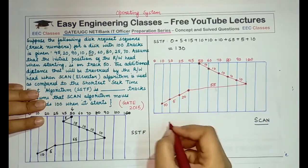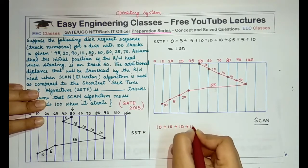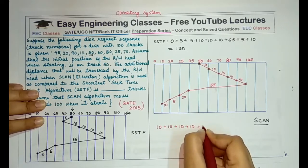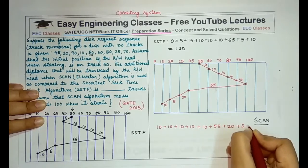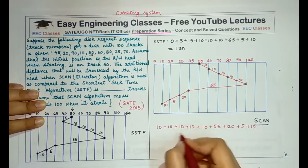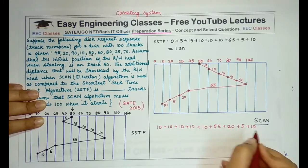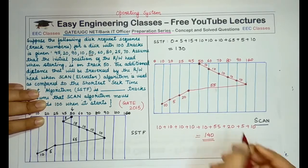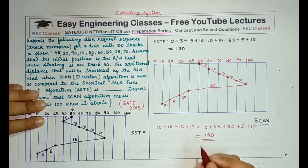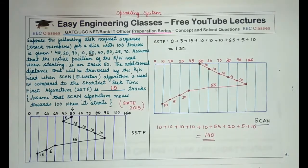So we have to sum up all these values and find out how much time this scan algorithm is taking. So plus 55, plus 20, plus 5, and plus 10. So if you sum this up, this will come 50 plus 55, 105, 125, 130, and 140. So a total of 140, which is 10 more than 130. So the answer is 10 because I told you initially also that you have to tell the difference. So 140 minus 130 is 10 tracks.